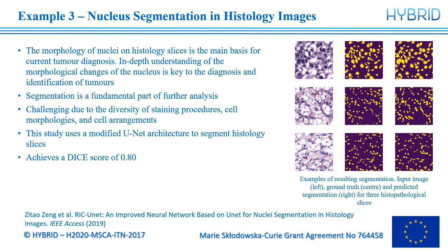Finally, an example of histological slice segmentation from a paper from 2019. The morphology of nuclei on histology slices is the main basis for current tumour diagnosis. An in-depth understanding of the morphological changes of the nucleus is key to the diagnosis and identification of tumours, and segmentation is a key part of this process. It is a challenging task due to the diversity of staining procedures, cell morphologies and cell arrangements. In this study, they use a modified U-Net architecture, which is one of the most popular image segmentation architectures, to segment the slices, achieving a Dice score of 0.8. On the right, we see examples of the actual images on the left, the ground truth segmentation in the centre, and the CNN's outputs on the right, which are quite faithful to the original segmentations.